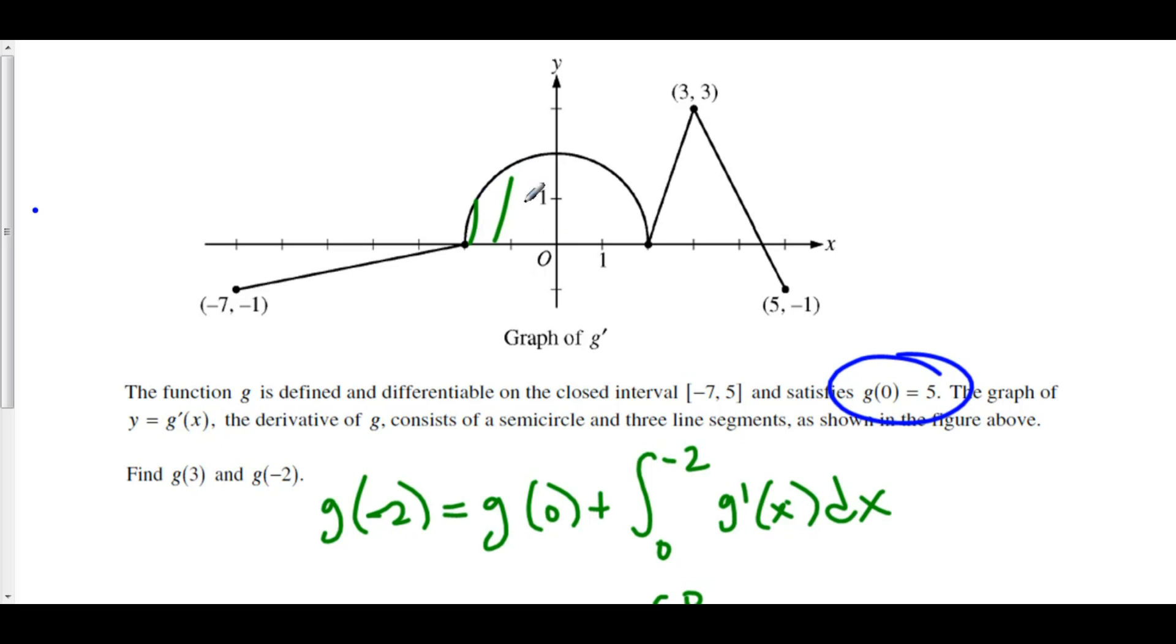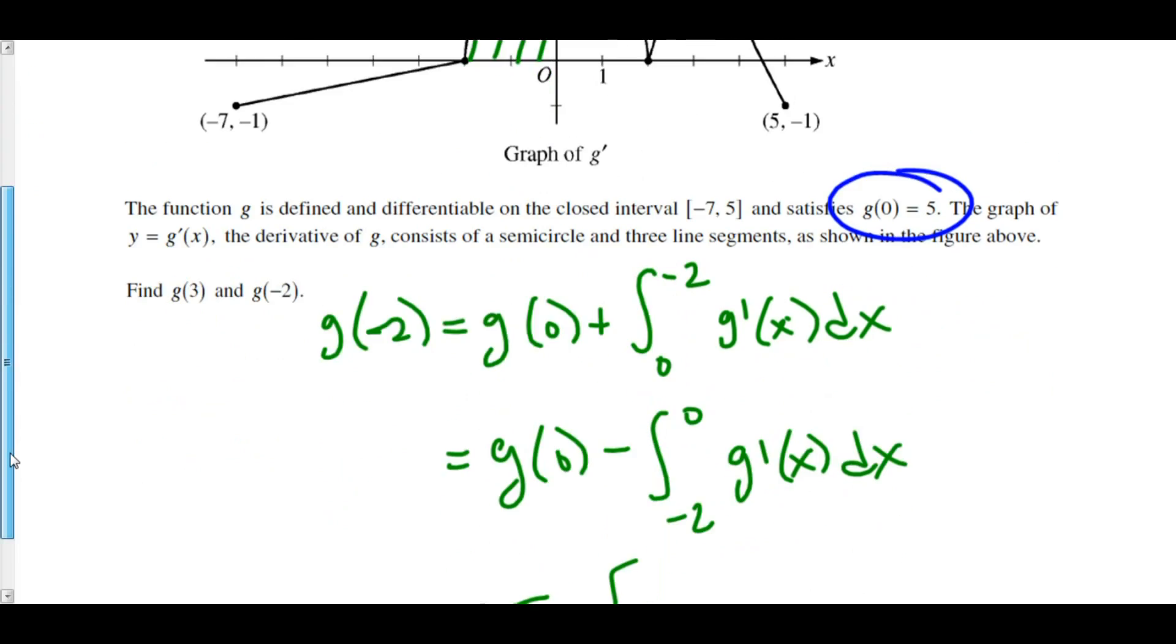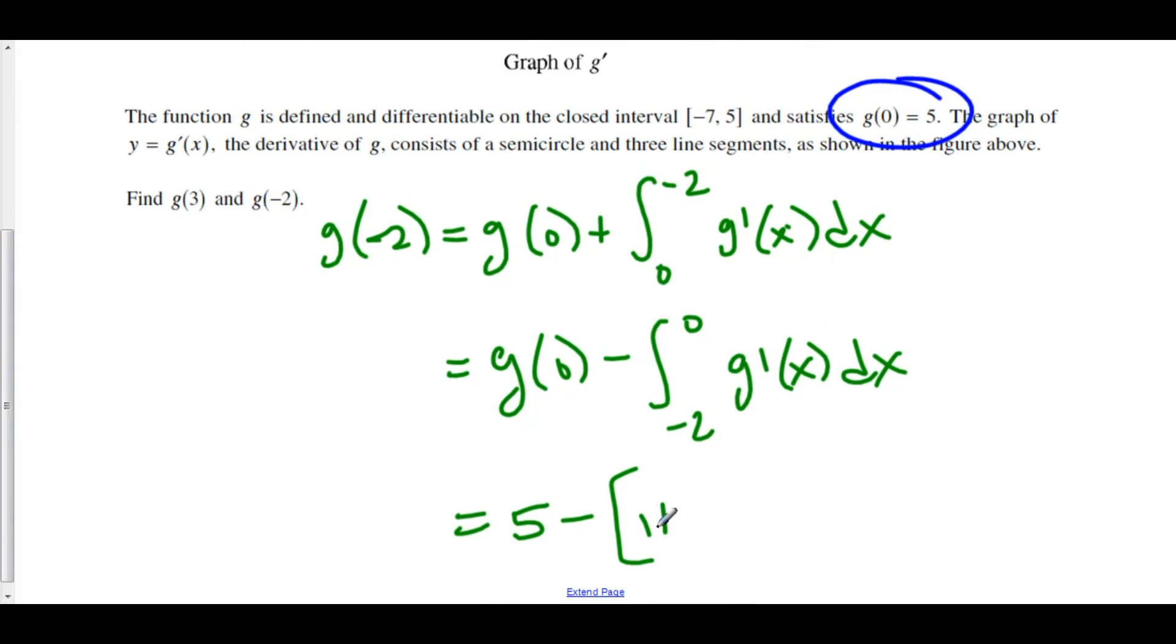Again, this is a quarter of a circle of radius 2. So, 1 fourth pi times 4 is just pi. That means that we are looking at 5 minus pi. Our net change here is negative pi.